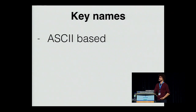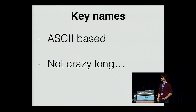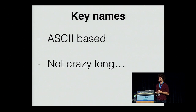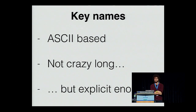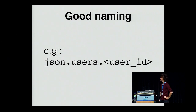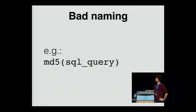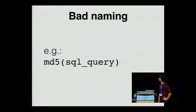Naming your keys — one of the hard problems of computer science. Use ASCII; memcached will not store anything that's not ASCII, so don't get fancy with Unicode. Don't make them crazy long because memcached has to hash them — keep them in the few dozens of characters. That will impact performance due to the hashing process. Do not use user input for cache names — don't trust user input. Good naming: something like `json.users.<user_id>` — very explicit. Bad example: an MD5 of a SQL query. It seems smart at first, but you can't tell what it corresponds to.